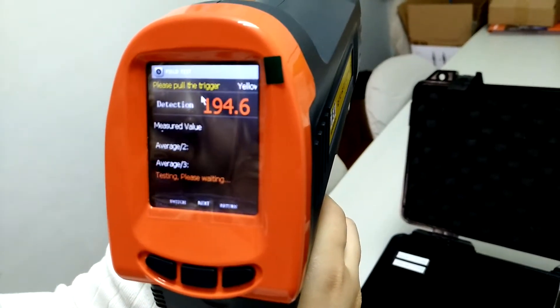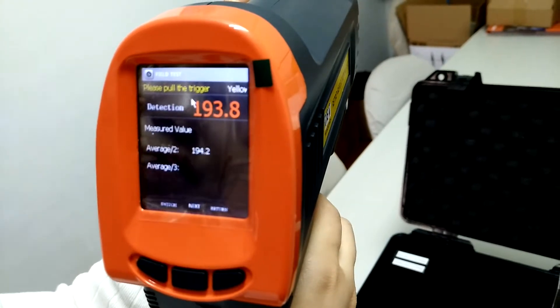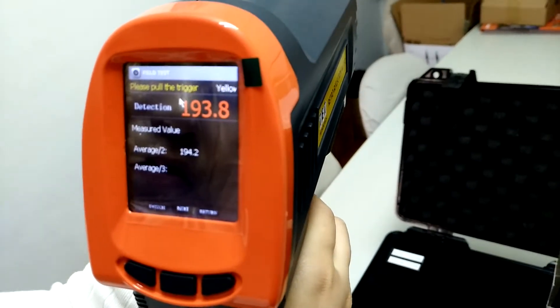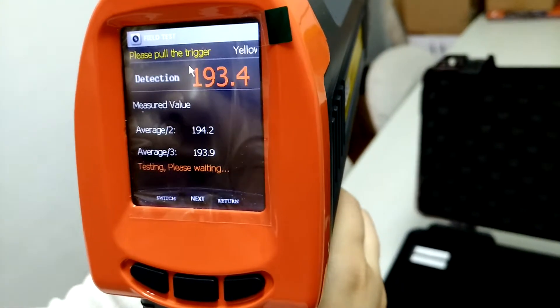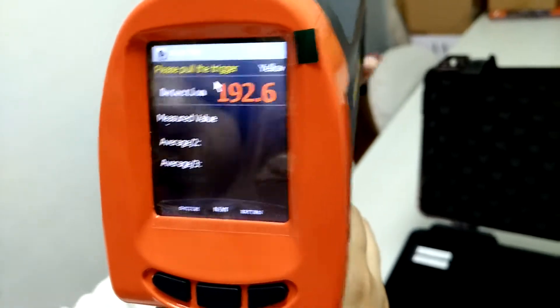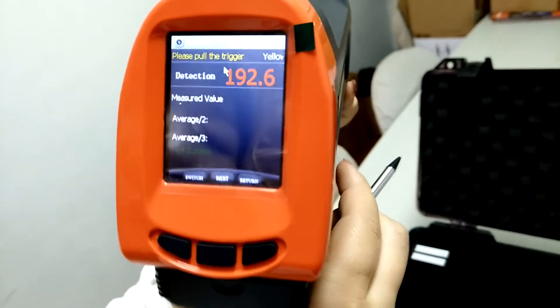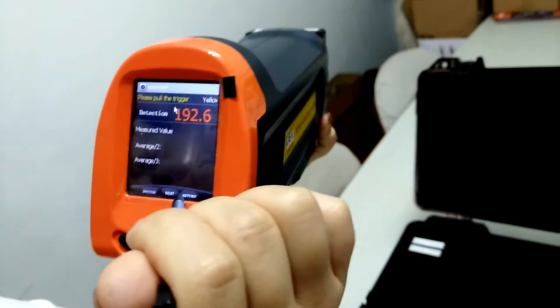Normally, we test three to five times to get the average value. This one is the result and return.